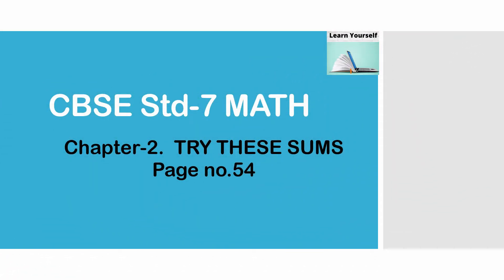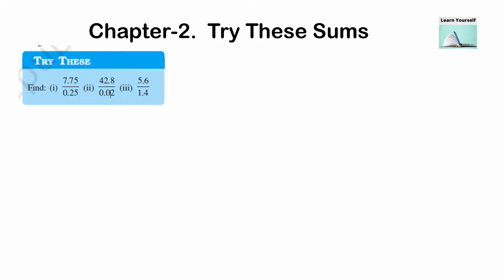Welcome to Learn Yourself. In this video we are going to learn about 'Try These' sums from page number 54, chapter number 2. In this try this sum we have to find out the product of this division. There are a total of three numerical problems. Let us start with the first one: 7.75 divided by 0.25.